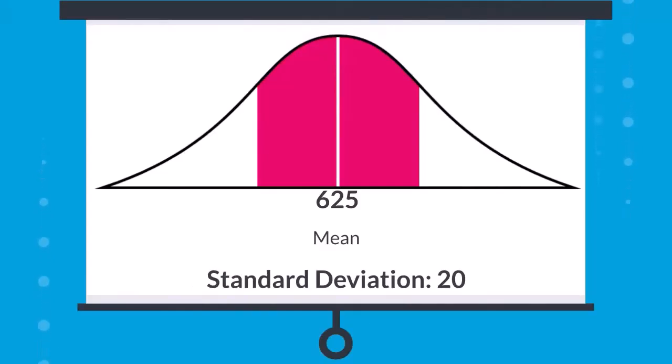In this case, the standard deviation is 20, so about two-thirds of the scores are 20 points above the mean, or 20 points below the mean. That's between 605 and 645.